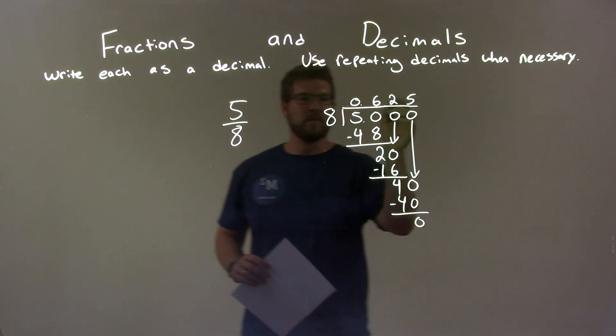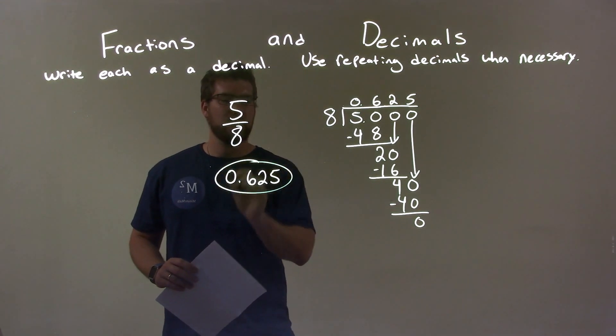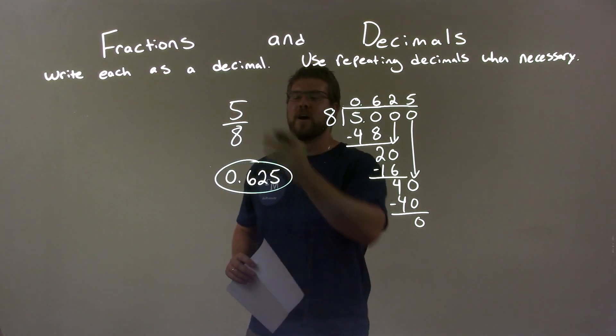And there we have our answer. 0.625 is the decimal version or decimal value of five eighths.